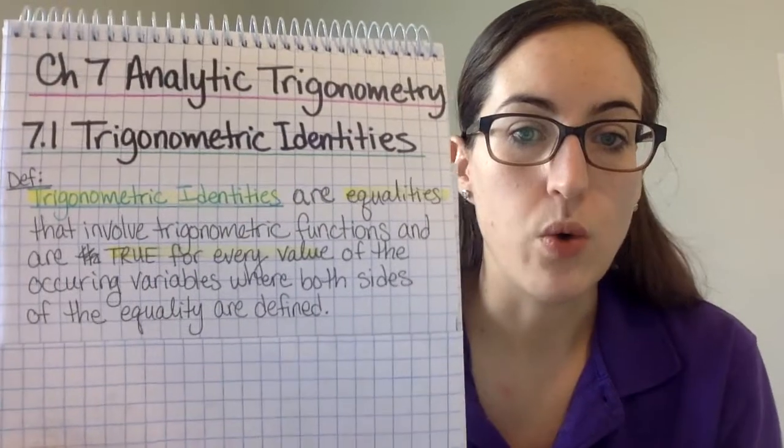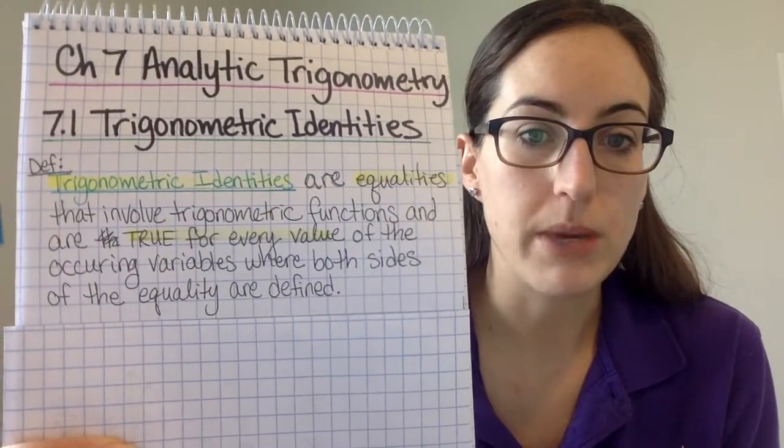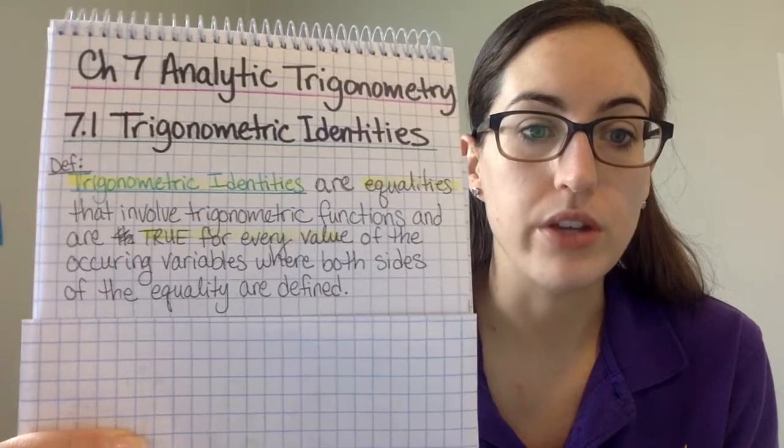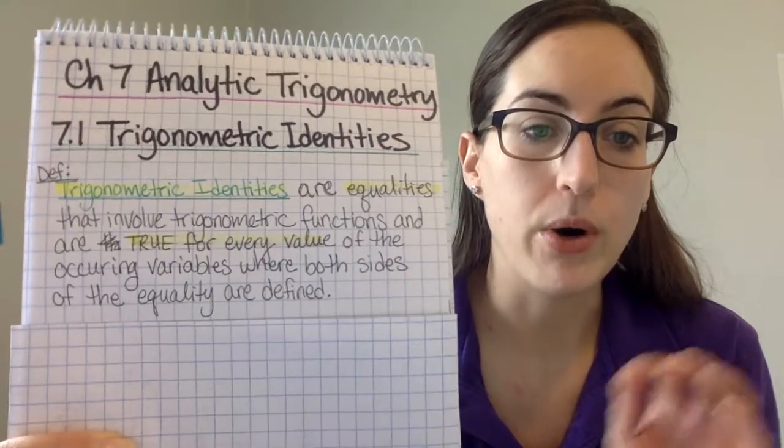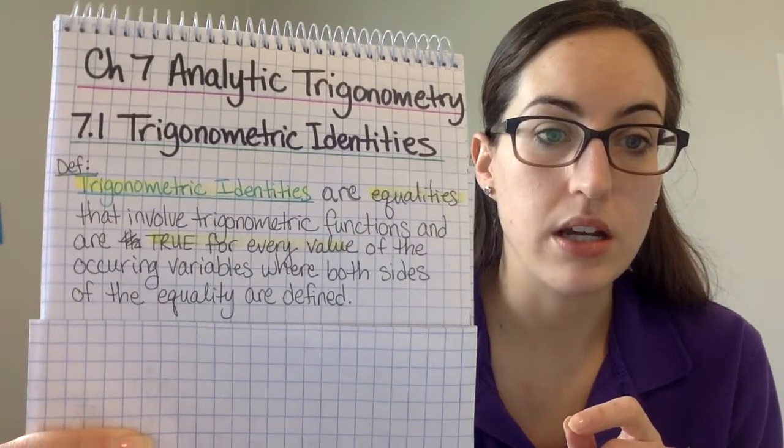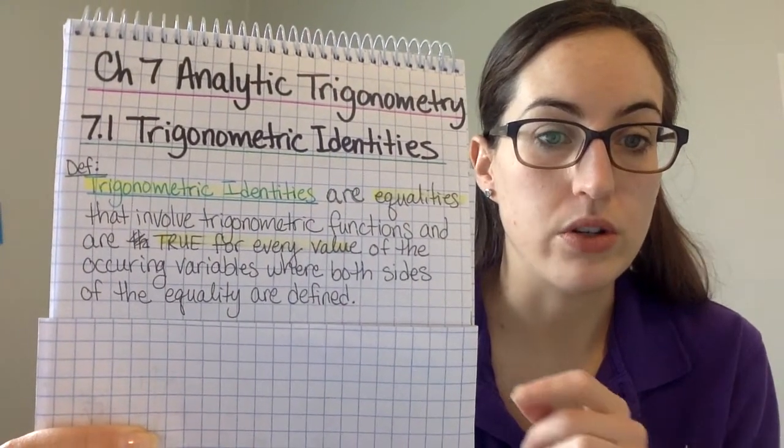What are trig identities by definition? Trigonometric identities are equalities that involve trigonometric functions and are true for every value of the occurring variables where both sides of the equality are defined. Pause this if you need time to copy that into your notes.